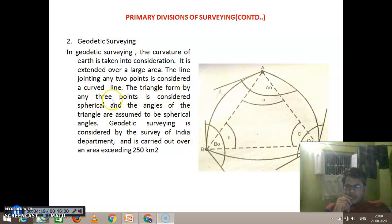The triangle formed by any three points is considered as a spherical triangle. So you see points A, B, C forming a triangle with curved lines - that is called a spherical triangle.